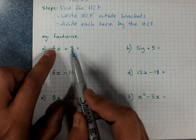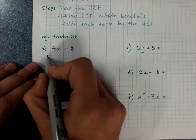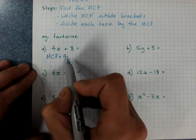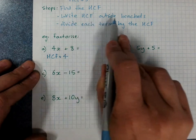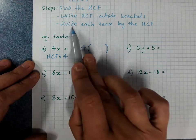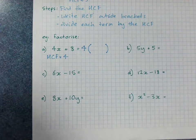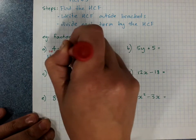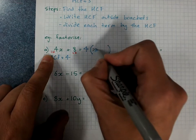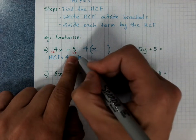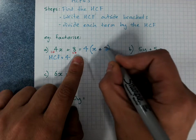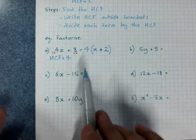Factorise means put the brackets in by dividing. First step, find the HCF. Look at the numbers and the letters. 4 and 8. Smallest number? 4. Does it go evenly into 8? Yes, it does. HCF equals 4. Check the letters. X? No x. So x doesn't go into both of them. HCF is 4. Write the HCF outside brackets. So 4x plus 8 equals 4 and brackets. Divide each term by the HCF. I'm going to do 4x divided by 4 and 8 divided by 4. 4x divided by 4 is x. Write it in here. Second term. 8 divided by 4 is 2. And was it positive or negative? They're positive. I write plus 2. You've factorised. First, you've put the brackets back in by dividing.